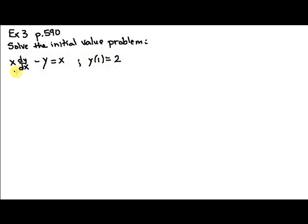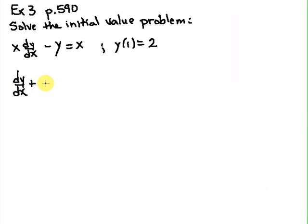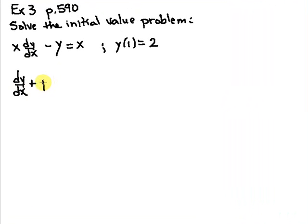We have x times dy/dx minus y equals x, and y(1) equals 2. Here's our differential equation. The first thing we would like to do is get it into a form that's simple to solve. It's almost a linear equation, a first-order linear equation, except remember that in our pattern for first-order linear equations, there's no coefficient in front of dy/dx. We want something of the form dy/dx plus p(x) times y equals q(x). So in this case we have some rearranging to do.